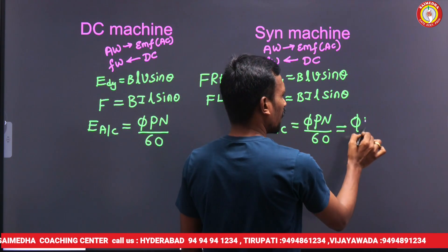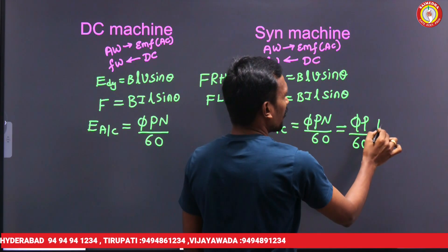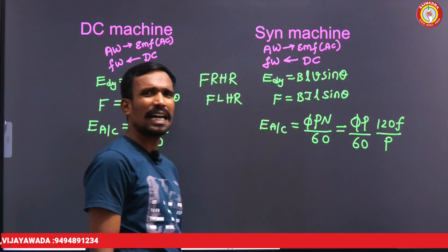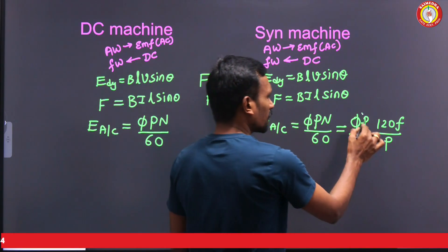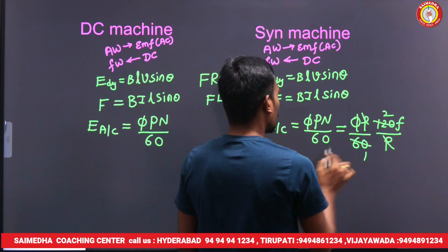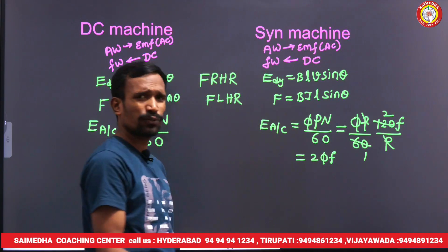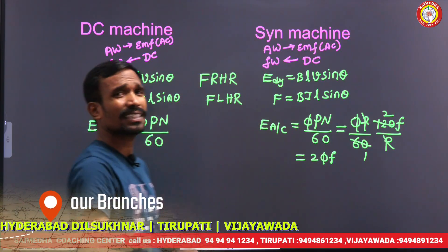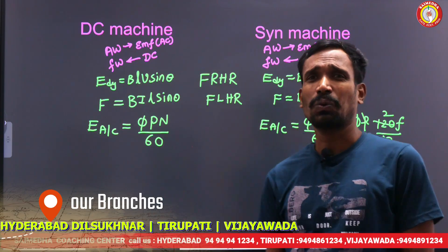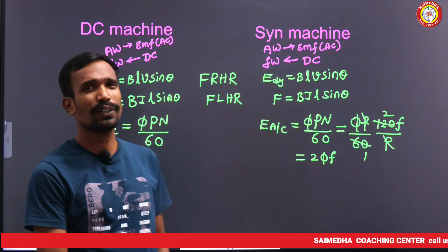The average EMF per conductor formula is 5pN/60. We know that synchronous speed is 120f/p. If you substitute and simplify, you get the average EMF per conductor as 2f. The mean formula is the same for both machines. So what are the key differences between them?